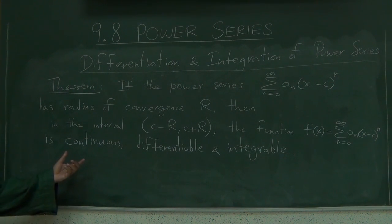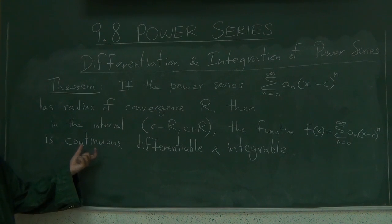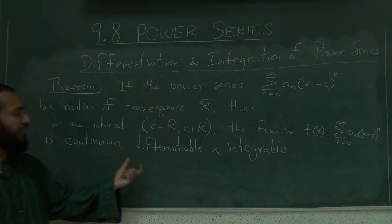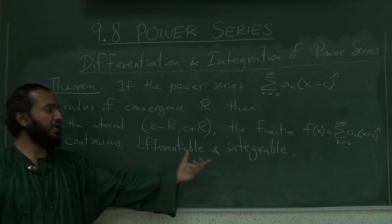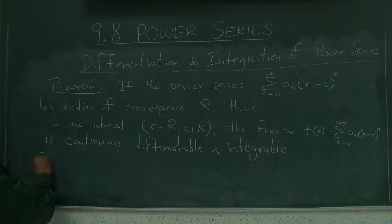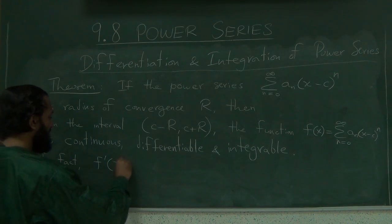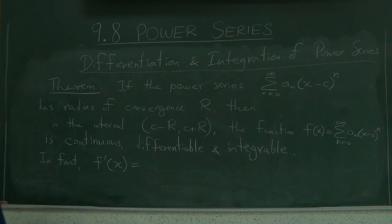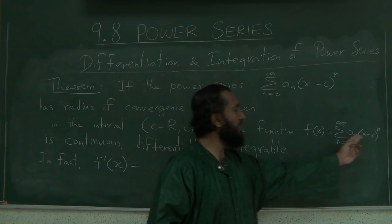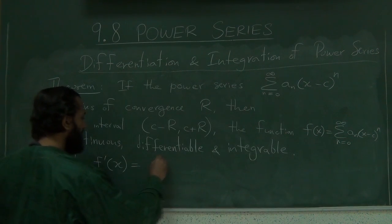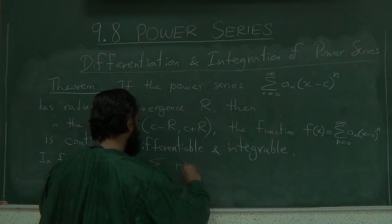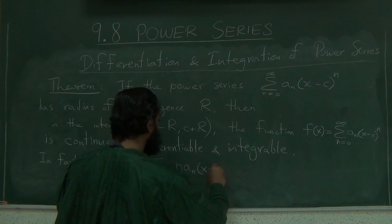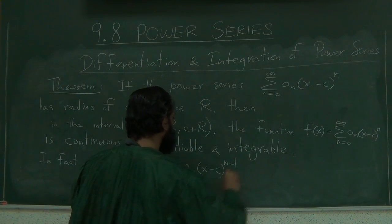And not only is this true, but in fact, the derivative is obtained by as simply as taking the derivative of each term at a time, just like you do for a polynomial, and same with the integration. So in fact, the f prime of x, right, will be, you take the derivative, so it will be, what will it look like? It will be a_n (x minus c) to the power n minus 1, okay?